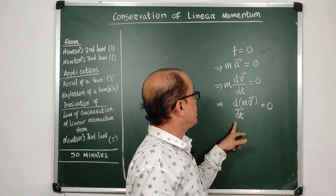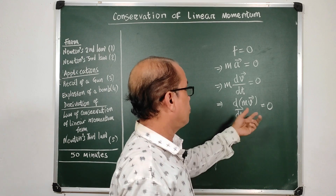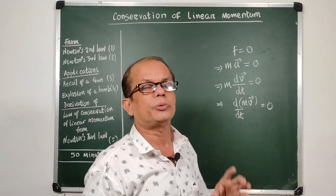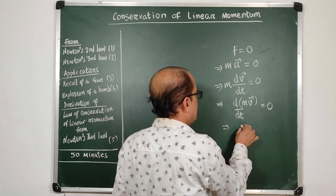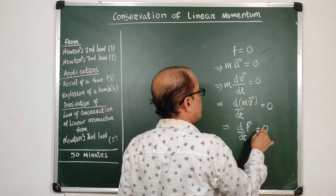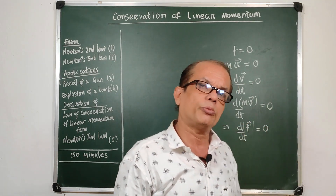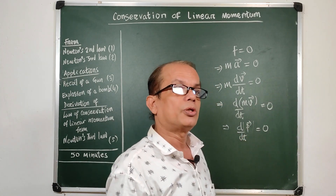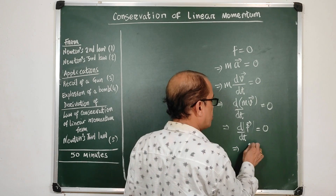So d/dt of mv — that means the change of the mv factor with time — is zero. mv is the product of mass and velocity, which is momentum. So we can say dp/dt = 0, meaning the change in momentum is zero. If the change in momentum is zero, then according to calculus the derivative of a constant is zero, so that means p is constant.